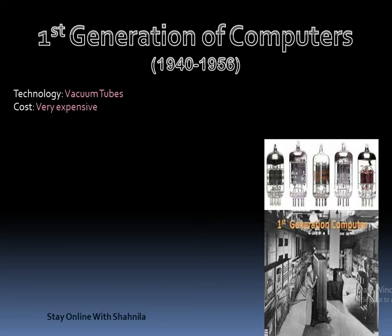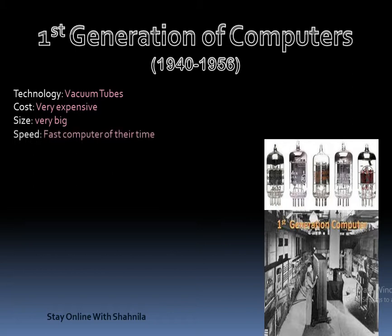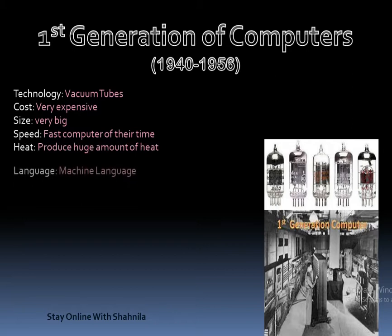First generation computers were very expensive and very big in size — they almost filled a full hall. They were the fastest computers of their time but consumed a lot of electricity and produced a lot of heat. For programming, machine language was used — the language of binary numbers, zeros and ones — which was the computer's native language.